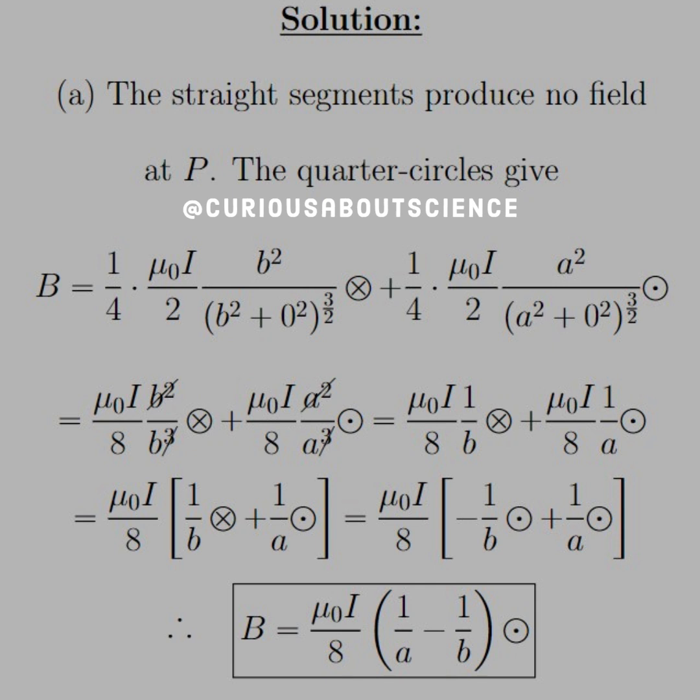We factor out a mu naught I over eight, and we're left with one over B with the direction of into the page plus one over A with the direction of out of the page. Let's note that since A's radius was less than B, since this inverse relationship is what we're analyzing here, that's the same as saying that one over A is greater than one over B.